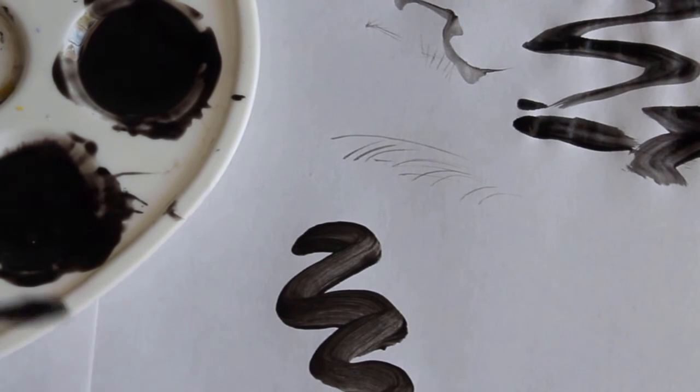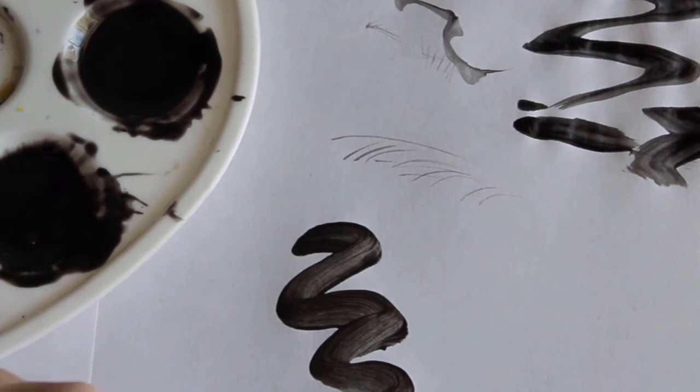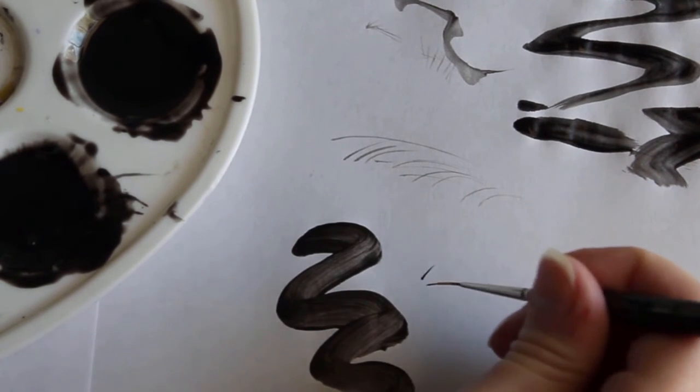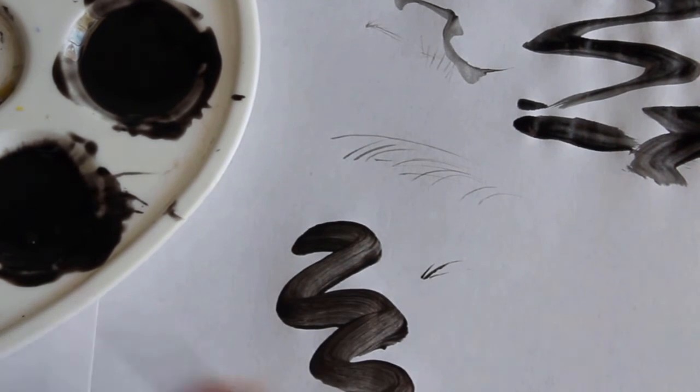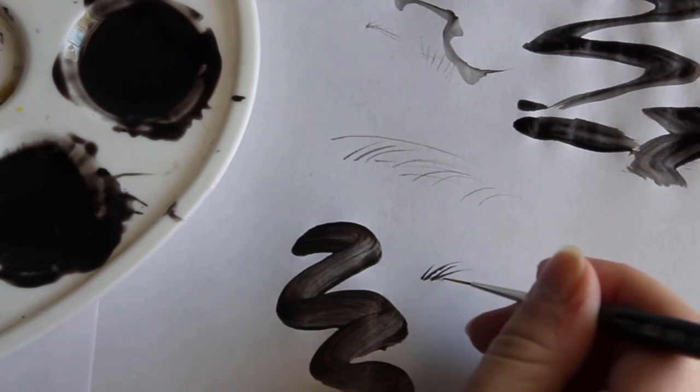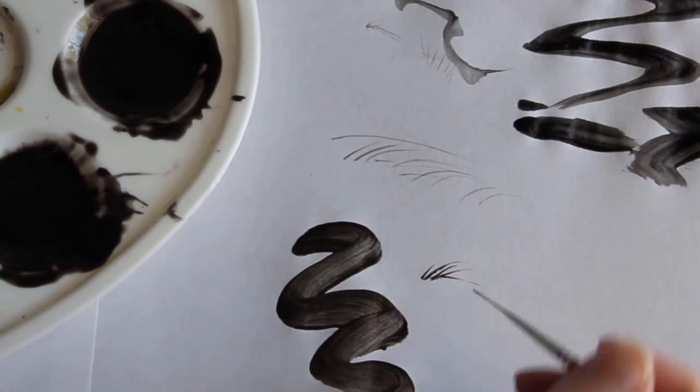So when you thin with medium it will increase opacity and slow down drying times, but it won't change the consistency of the paint. It stays thick and gloppy and makes fine lines simply impossible. Medium has its uses for face-ups of course, but thinning paint isn't one of them.